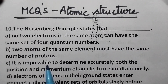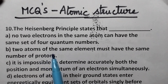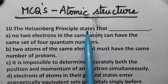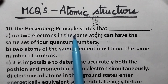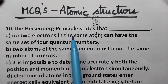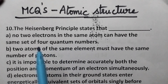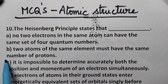Hello students, welcome back to my channel. In this video, I am going to discuss multiple choice questions based on atomic structure. The Heisenberg principle states that it is impossible to determine both position and momentum of the electron accurately and simultaneously. Here option C is the right answer.